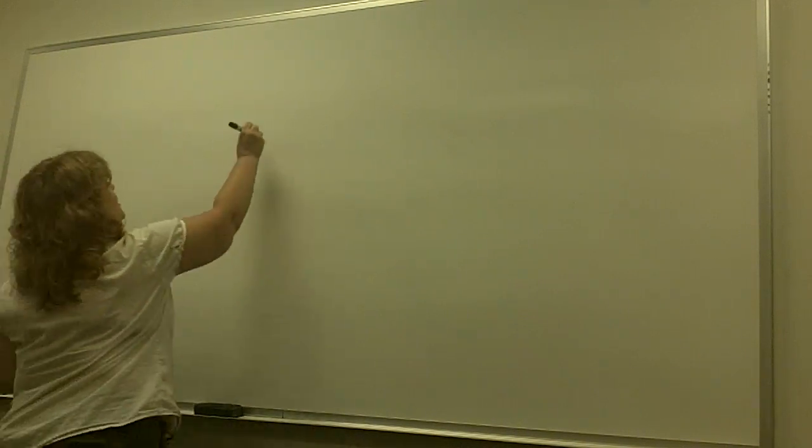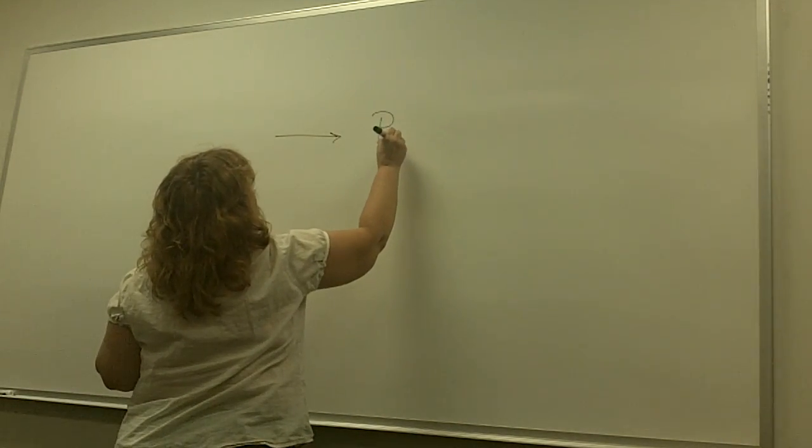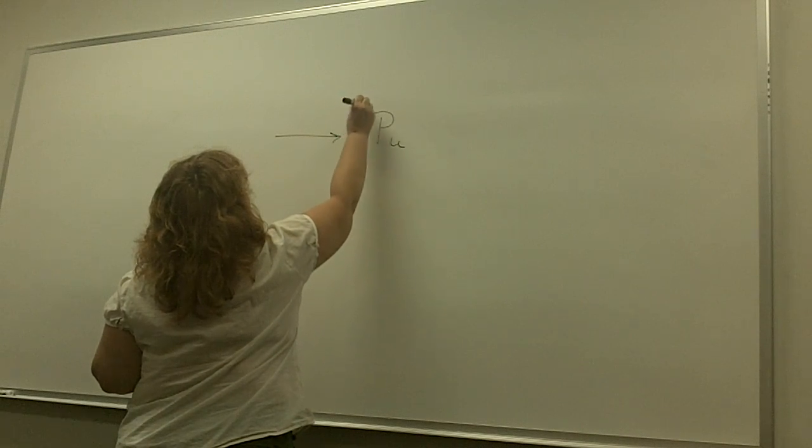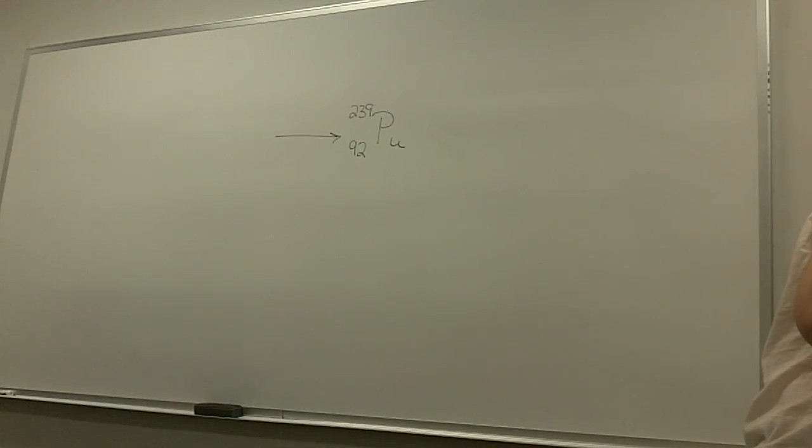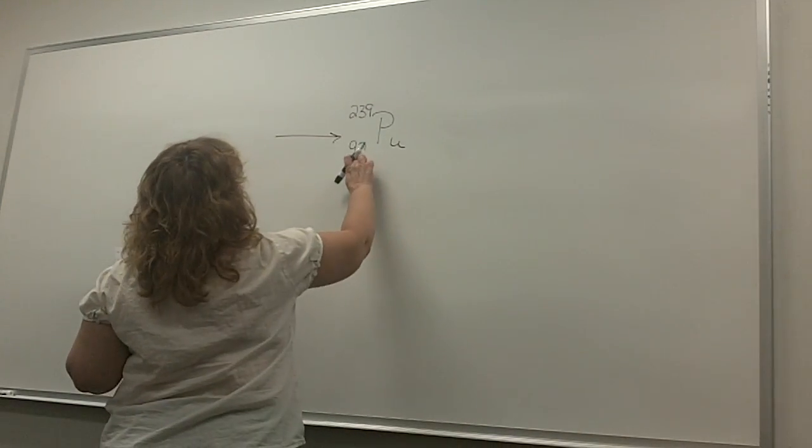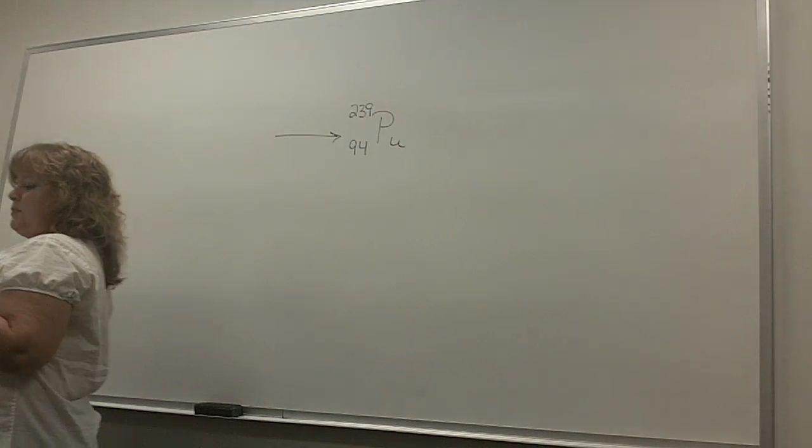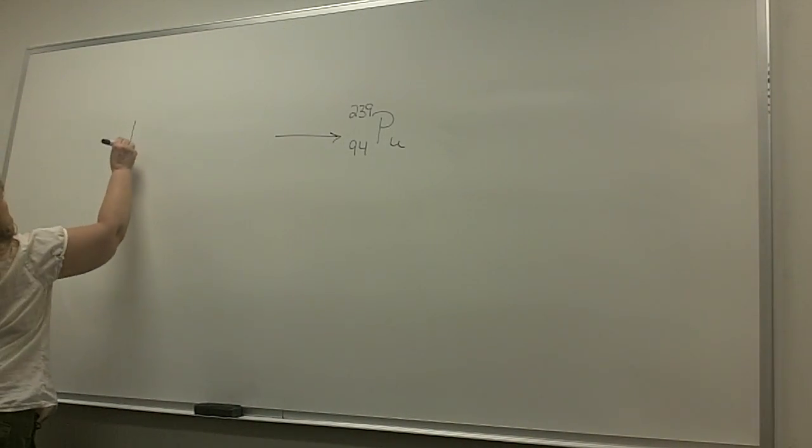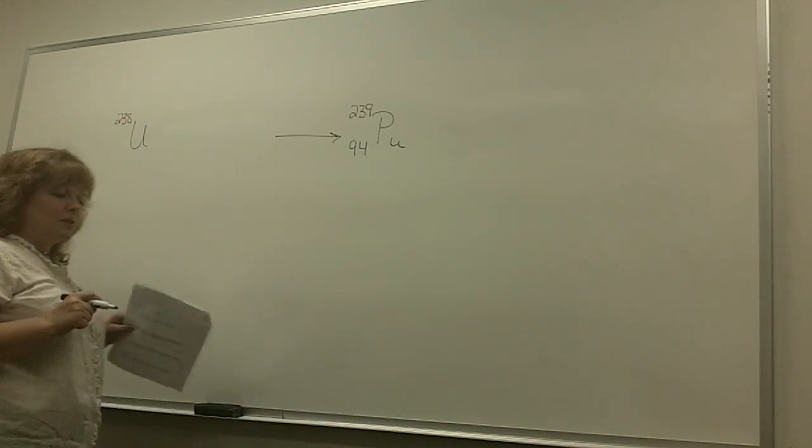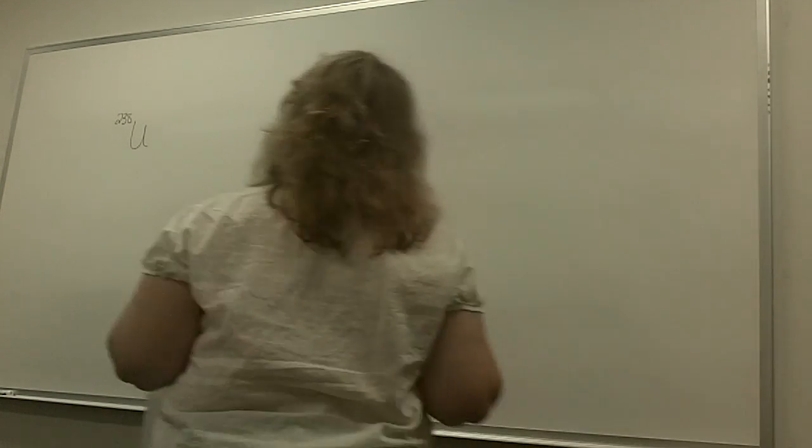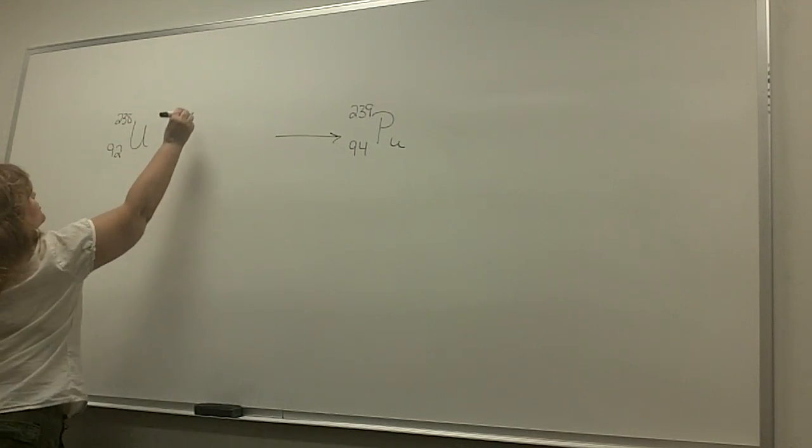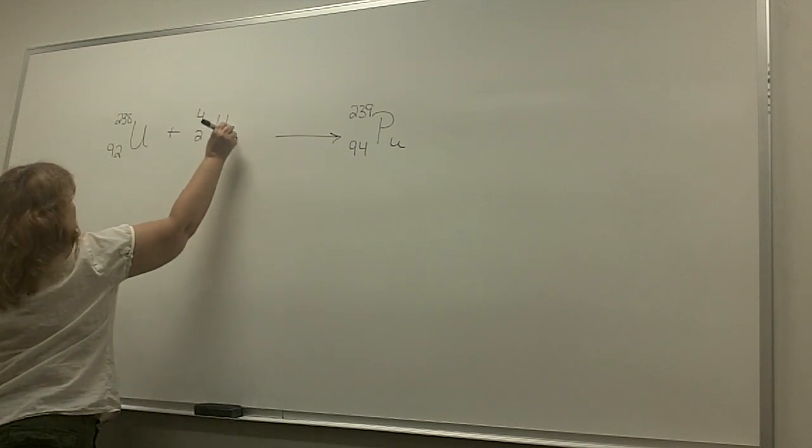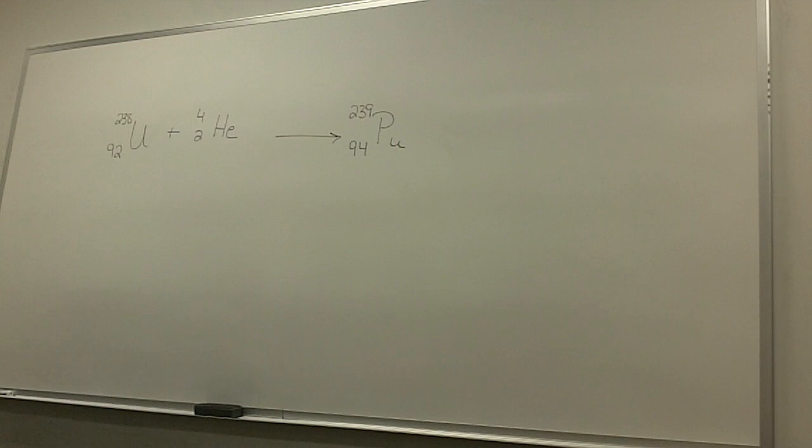So, plutonium-239 can be produced, so that tells us that the plutonium is on this side. The plutonium is Pu, and it's 239, and the atomic number is 94. It's produced by bombarding uranium-238. So we're taking uranium-238, and its number is 92. And we're bombarding it with alpha particles. And it says, how many neutrons will be produced as a byproduct of each reaction?